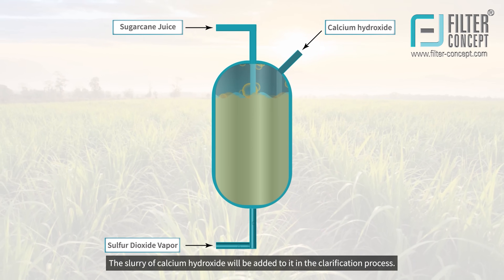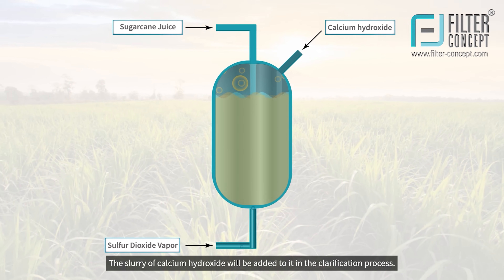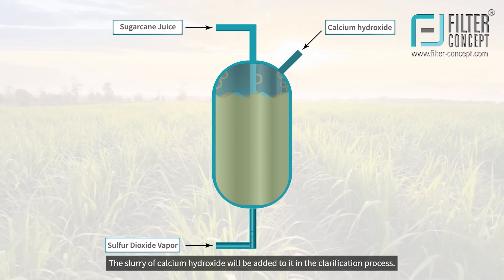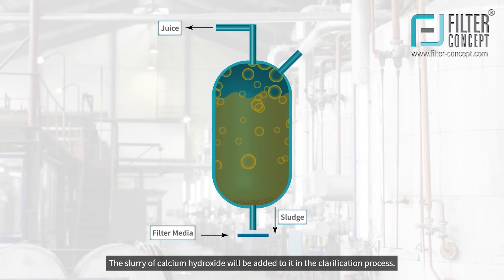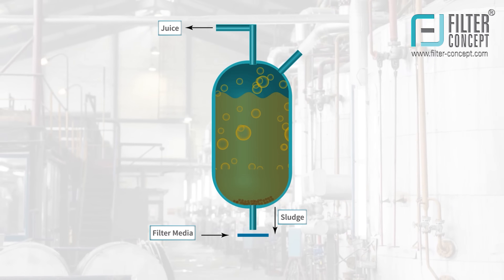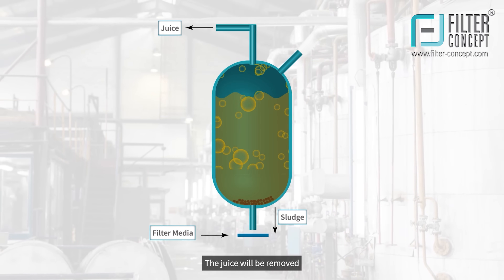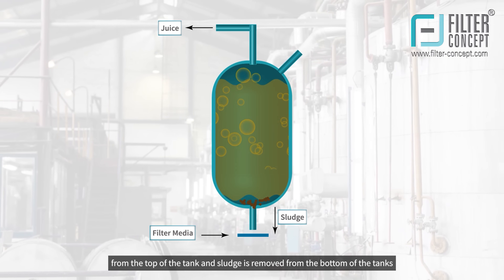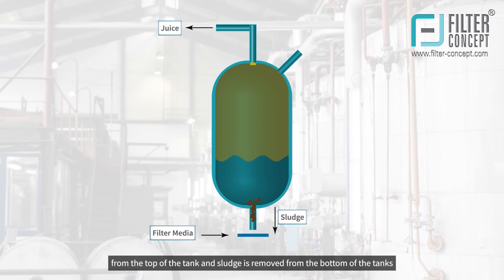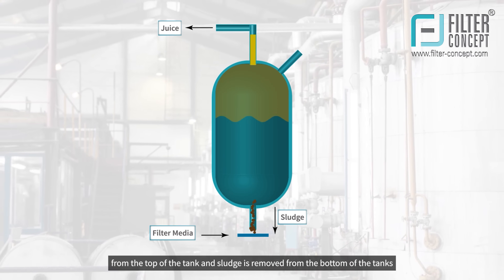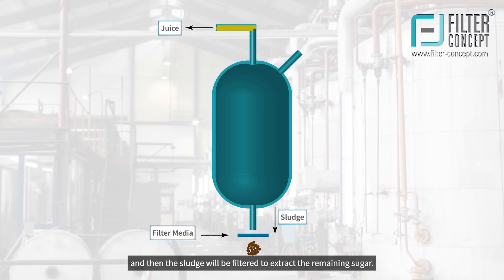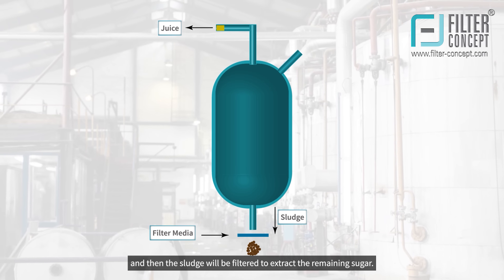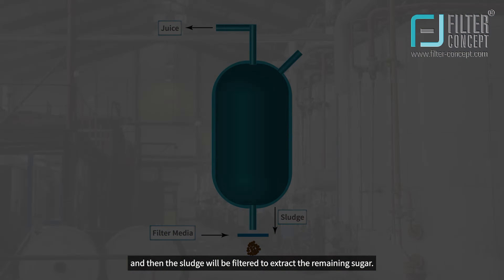A slurry of calcium hydroxide will be added to it. In the clarification process, the juice will be removed from the top of the tank and sludge is removed from the bottom of the tanks, and then the sludge will be filtered to extract the remaining sugar.